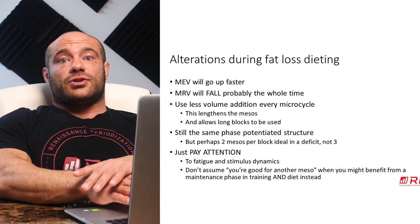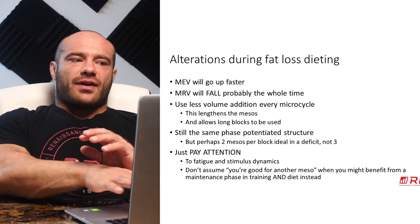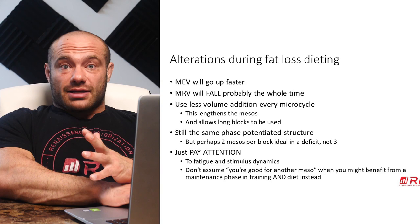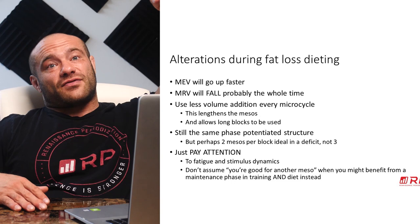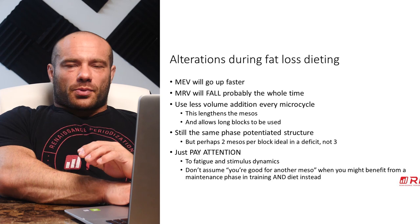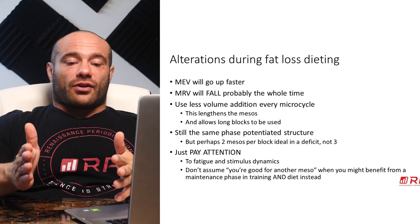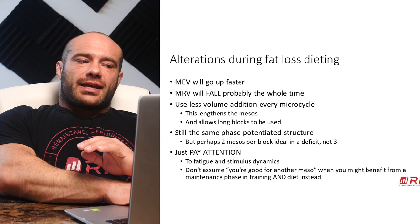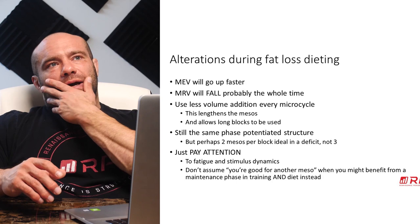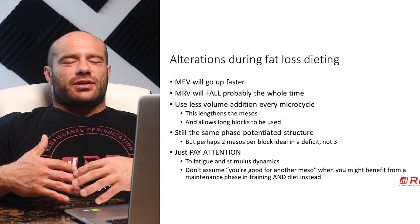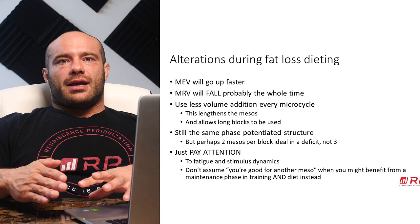How does this change during fat loss dieting? MEV goes up faster because you have a ton of catabolism going on and need to counteract it with further MEV increments. Fatigue goes up faster too, and MRV will probably fall the entire time — though not as fast as you'd think, because fibers convert to slower twitch and work capacity improves quickly as you lose body fat. But MEV and MRV converging is still a problem. If you just run your normal volume progression, you might only get through a three-week accumulation in a mesocycle before things fall apart.